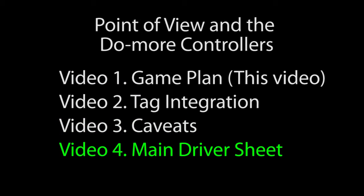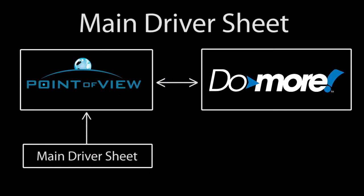In the fourth video we'll look at the second method to connect Point of View to a Do More controller, which is using the main driver sheet. Just like tag integration, the main driver sheet is just a big lookup table. The difference is, with the main driver sheet you manually fill in the details. While it is harder and a little tedious, it gives you total control over how the tags are brought into Point of View, which can be really handy in some situations. It also gives the Point of View project a way to talk to the Do More controller if you don't happen to have access to the controller software to do the export.